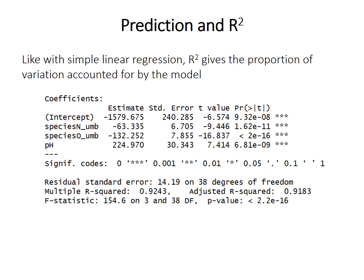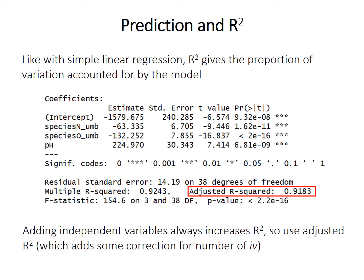Very briefly about prediction: multiple linear regression gives an R-squared value just like simple linear regression, indicating the proportion of variation accounted for by the entire model with all predictors included. Adding independent variables always increases the raw R-squared, because the more variables you have, the easier it is to find some fit. So multiple regression generally uses the adjusted R-squared, which includes a correction to account for the number of independent variables included — essentially assessing whether the addition of a new variable increases model fit by more than you'd expect from chance.